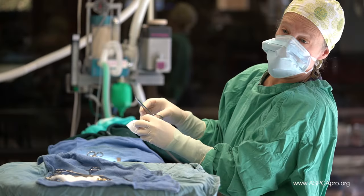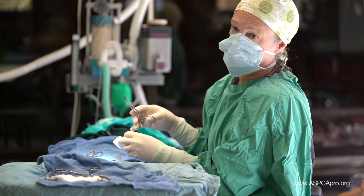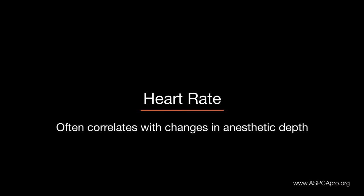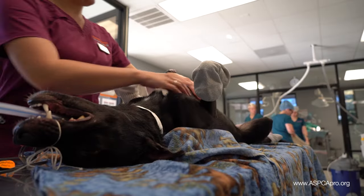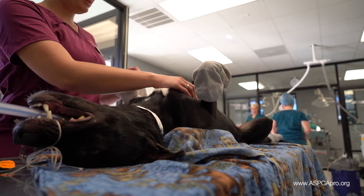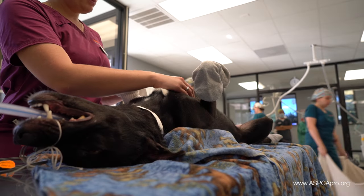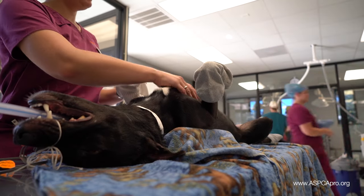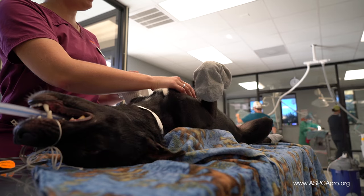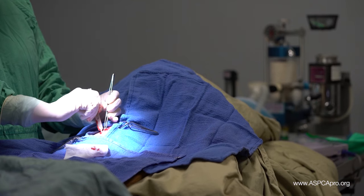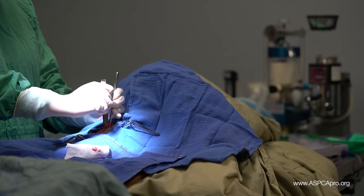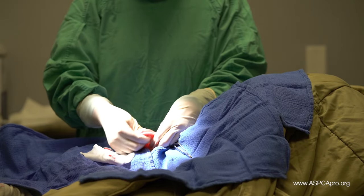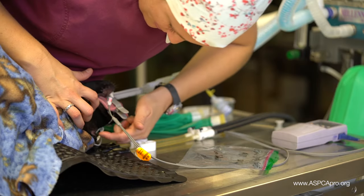Changes in vital parameter trends or the presence of certain physical responses should be communicated immediately to the veterinarian. Heart rate often rises when a patient is light under anesthesia and lowers when a patient is deep. Keep in mind that heart rate can also change in response to surgical stimulation and fluctuating blood pressure, so do not focus solely on heart rate as an indicator of anesthetic depth.